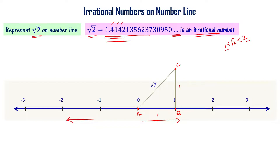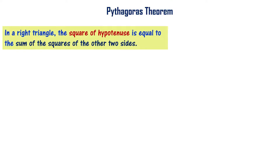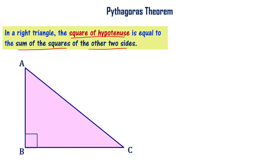That result comes from the Pythagorean theorem, which states: in a right-angle triangle, the square of the hypotenuse is equal to the sum of the squares of the other two sides. In triangle ABC, angle B is 90 degrees, so AC is the hypotenuse, and AC² = AB² + BC².